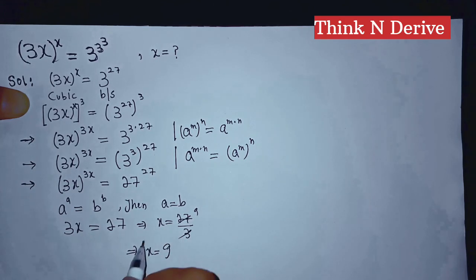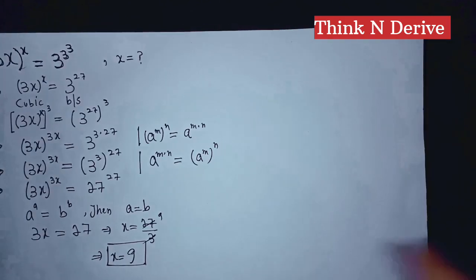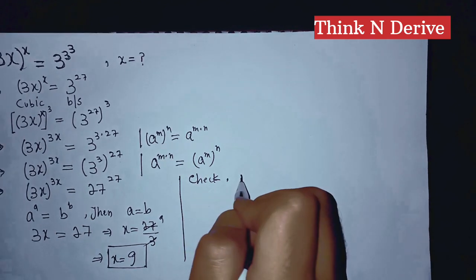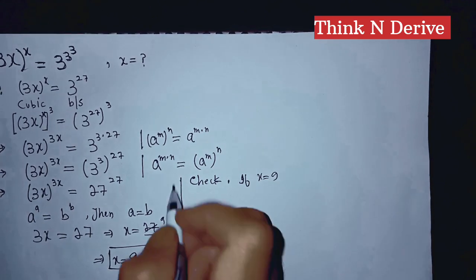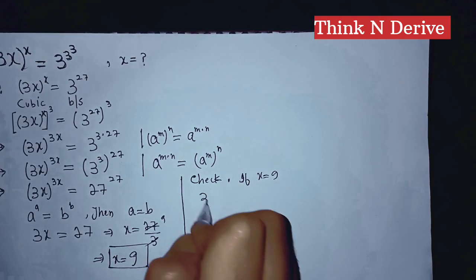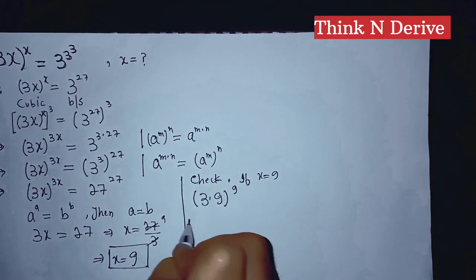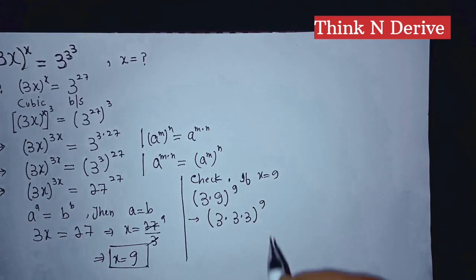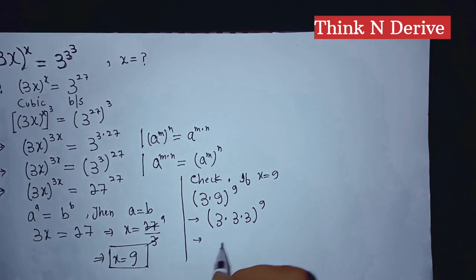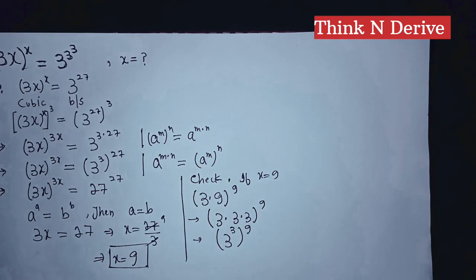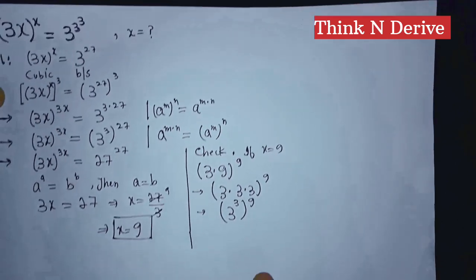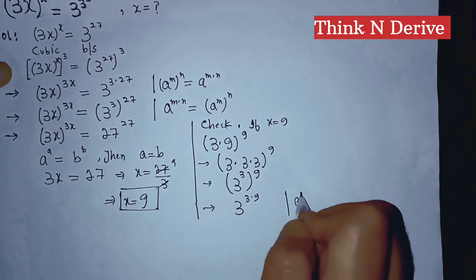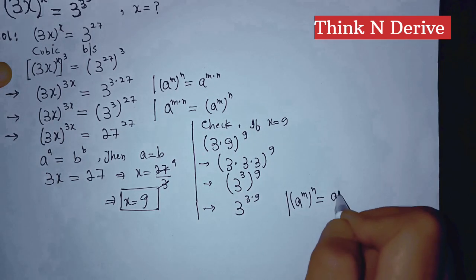Now we will verify this. If x equals 9, then the left hand side becomes 3 into 9 to the power 9. That is 3 into 9, which can be written as 3 into 3 to the power 9, and 3 into 3 can be written as 3 to the power 3 to the power 9, that is 3 to the power 3 into 9. Applying the rule a to the power m into n equals a to the power m times n.